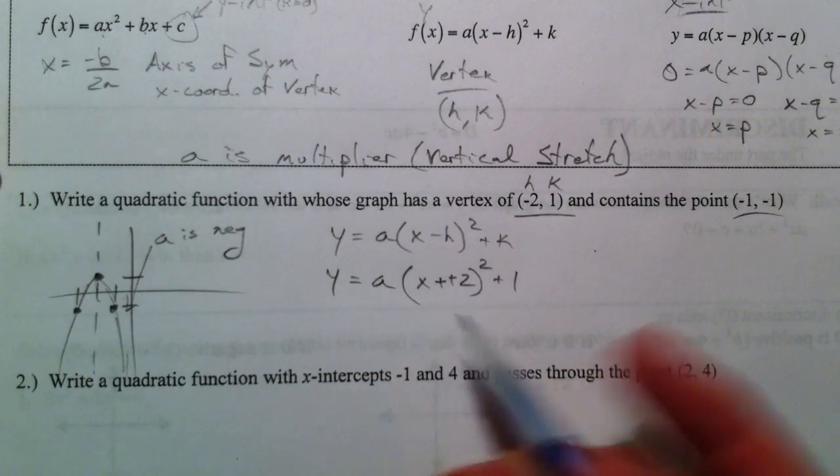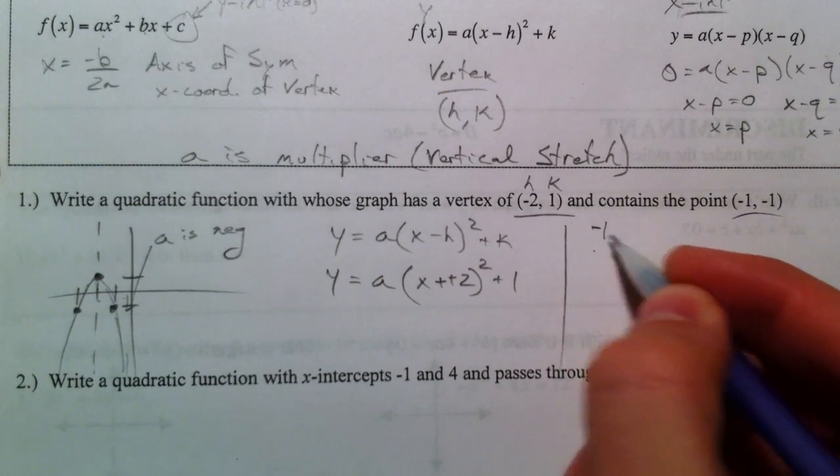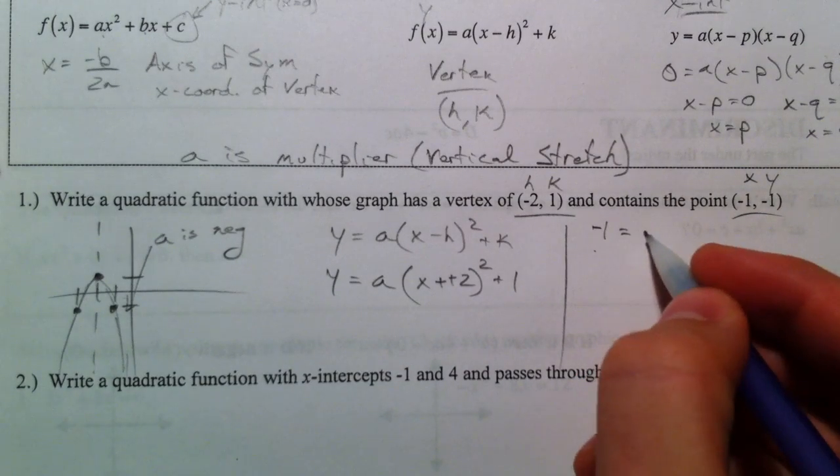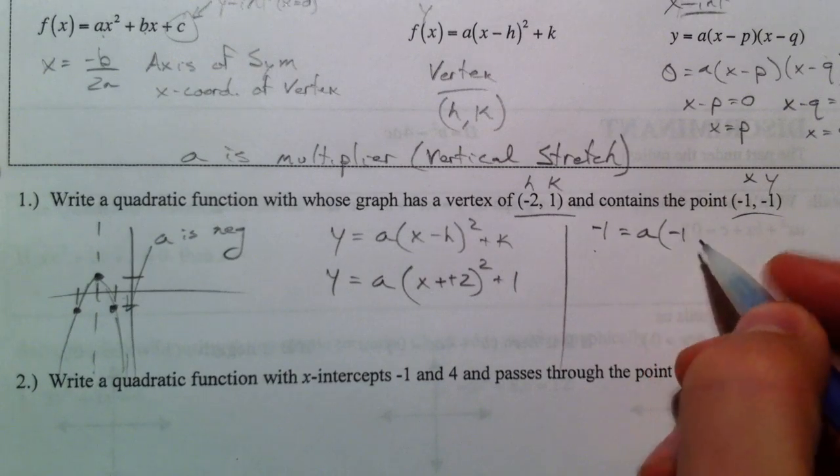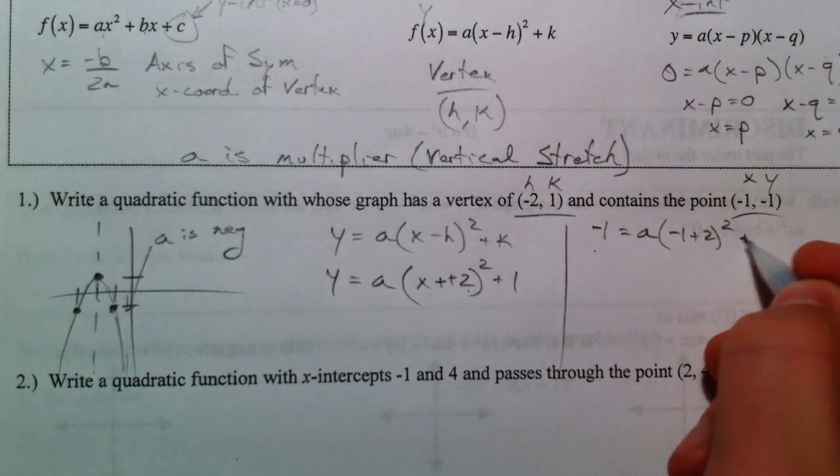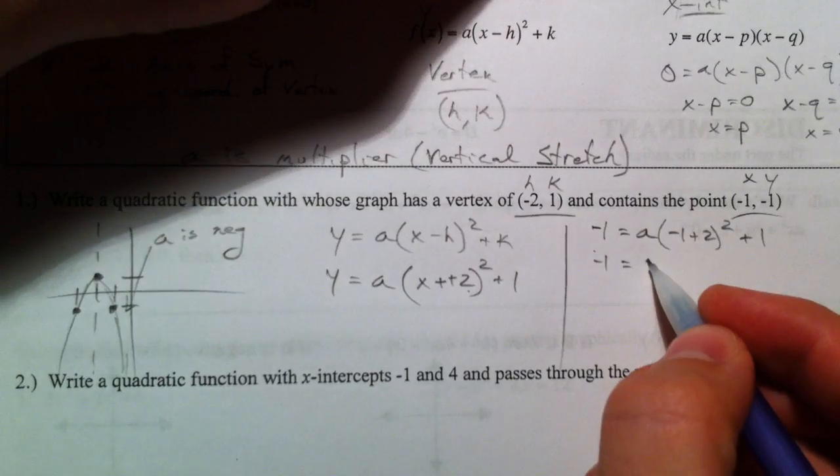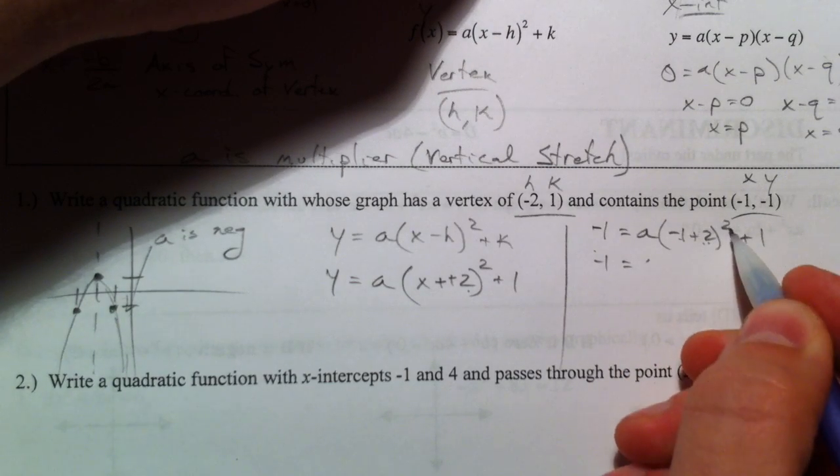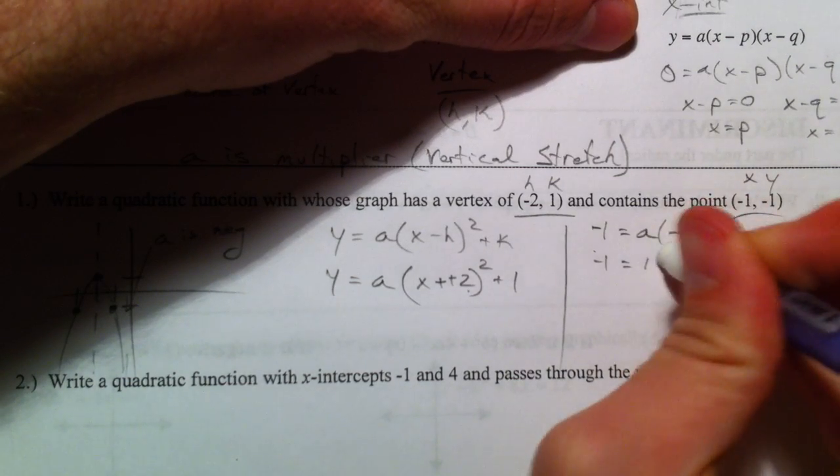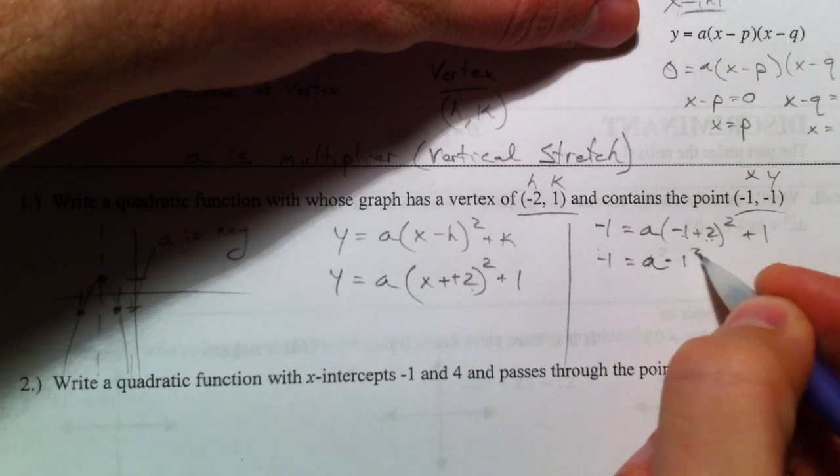Now I don't know a, but that's what I'm going to do next. Next, I'm going to plug in negative 1 for x and for y. Negative 1 equals our a, which I don't know, negative 1 plus 2 squared plus 1. So we have negative 1 plus 2 is 1, 1 squared. Actually, let's write out a couple. So this is a times 1 squared plus 1.